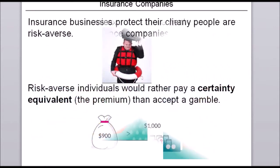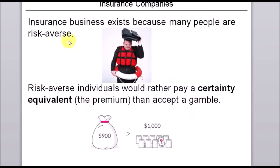Insurance companies don't do that for free — they charge a fee called the premium. In order to exist, insurance companies must charge premiums that are enough to cover all client claims, operating costs, and profits, since many insurance companies are for-profit organizations. This means the premiums clients pay should be greater — maybe even considerably greater — than the expected value of a loss. But why would people pay premiums greater than the expected value?